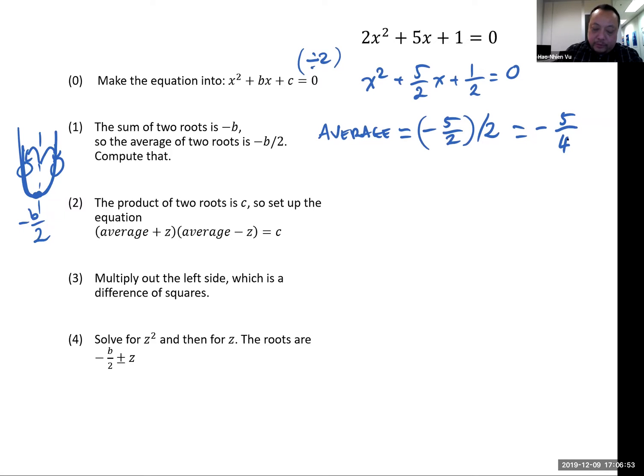The product of the two roots is c, so I'm going to take the average minus 5 fourths, plus some z is one of the roots, negative 5 fourths minus the same z is the other root, and they have to be equal to 1 half. The left hand side is the difference of squares. It multiplies to 25 over 16 minus z squared, and the right hand side is 1 half.